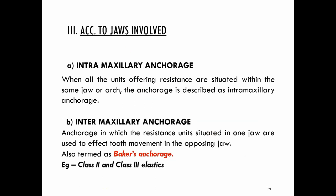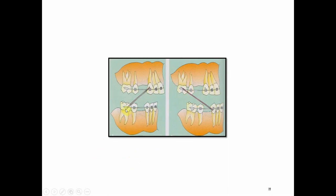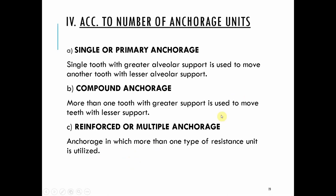Based on the jaws involved: intramaxillary anchorage is where the anchorage units are situated in the same jaw or arch. Examples include screws, springs, or the coffin spring used within one arch. Intermaxillary anchorage (also called Baker's anchorage) is where the anchorage unit is in one jaw but the teeth to be moved are in the opposite jaw. Examples include Class II and Class III elastics.